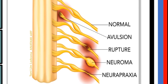Another type of nerve injury is rupture. In rupture, the nerve is torn but not at the spinal cord attachment. Here is an example of rupture — the nerve is torn but not from its attachment to the spinal cord, as in the case of avulsion.